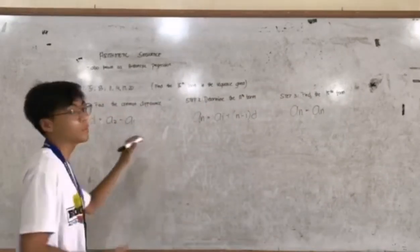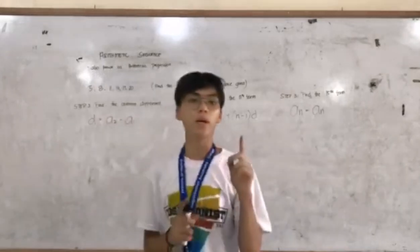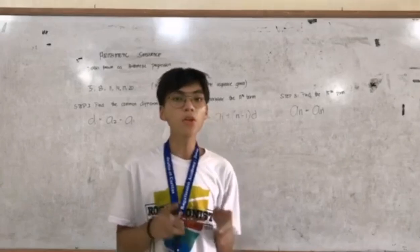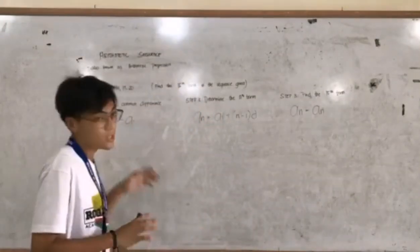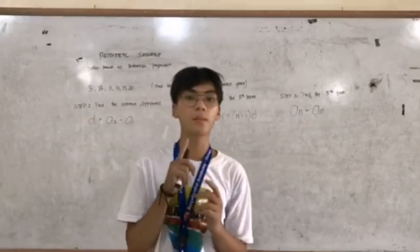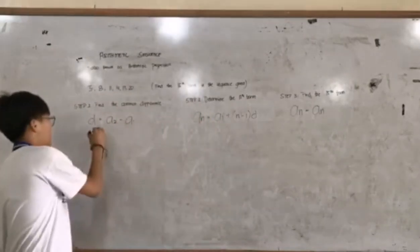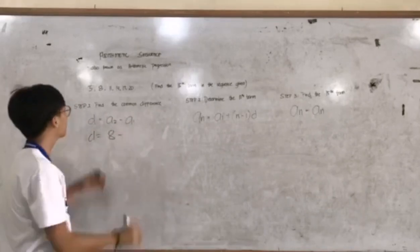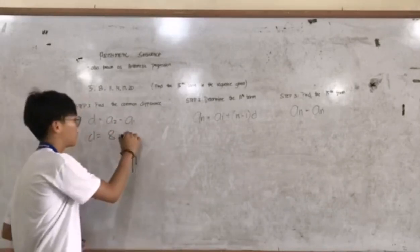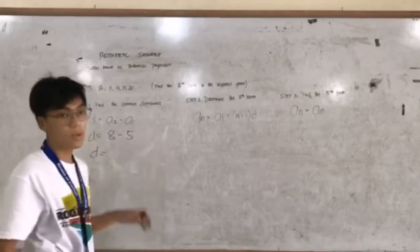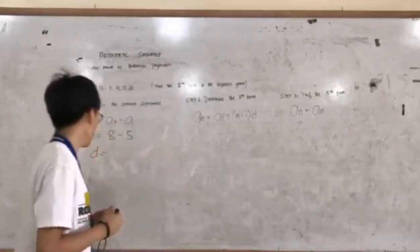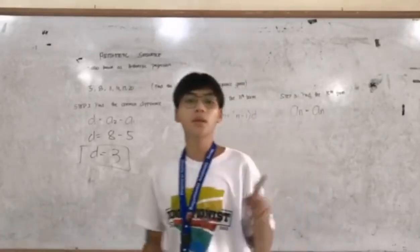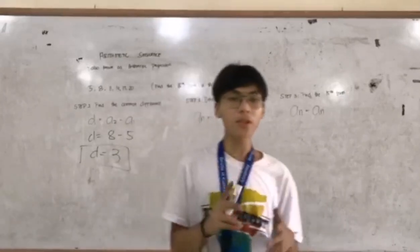Step number one: find the common difference. In order to find the common difference, you should use the formula d equals a sub 2 minus a sub 1. So d equals a sub 2, which is 8, minus a sub 1, which is 5. Subtracting 8 minus 5 gives us 3. So our common difference is 3.